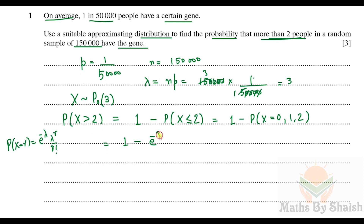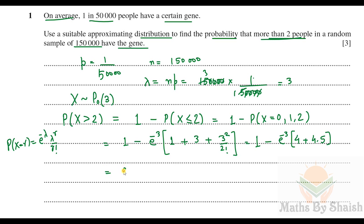So the expression becomes 1 − e^(−3) × (1 + 3 + 9/2), which is 1 − e^(−3) × (1 + 3 + 4.5) = 1 − e^(−3) × 8.5. Calculating from the calculator, this value is 0.5768, so the answer to 3 significant figures is 0.577.